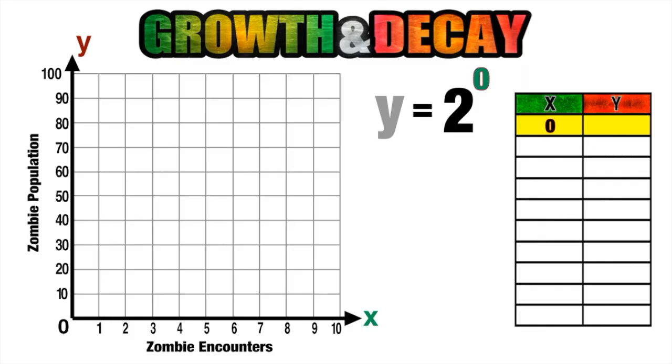We can start with the value x equals zero, which represents the time before there were any zombie encounters. So in terms of our equation, we have to replace the x, the exponent with zero, and then we can evaluate and we know that two to the zero or anything raised to the power of zero just equals one.